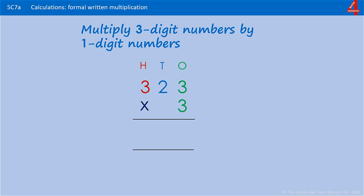We take the number that we're multiplying by at the bottom and multiply it by each digit in turn above. Starting with 3 times 3, which is 9, then we multiply that 3 by the 2. Remember that that 2 actually represents 20, but because we're using a formal and more efficient method, it's absolutely fine to say 3 times 2, because that 6 will be in the tens column anyway, so it represents 60.